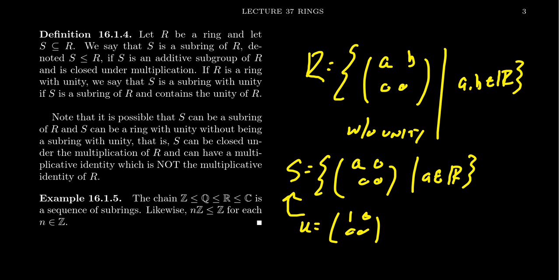but that's not a unity for the whole ring. That's a curious observation. We have a subring which has unity, but it's not the unity of R. So we wouldn't call it a subring with unity. It's a subring, but it does have unity. The language might seem a little bit weird here, but this is an important distinction.